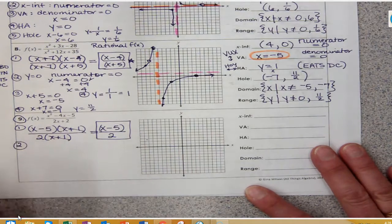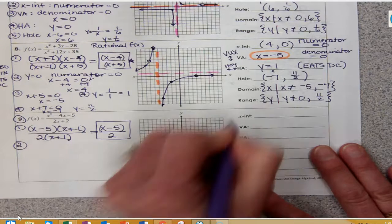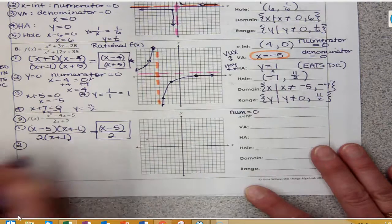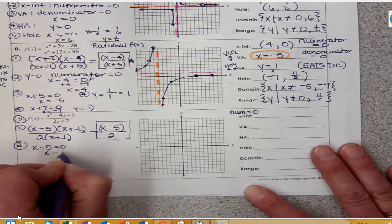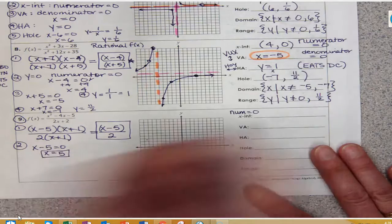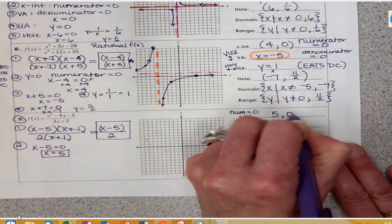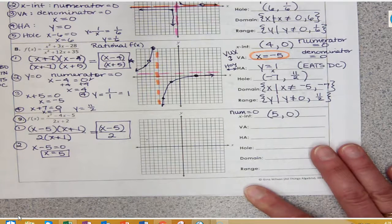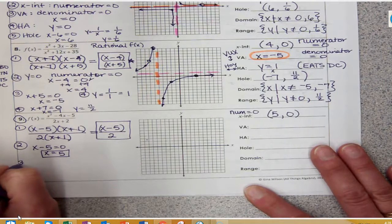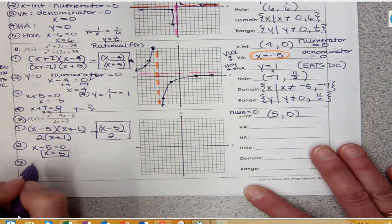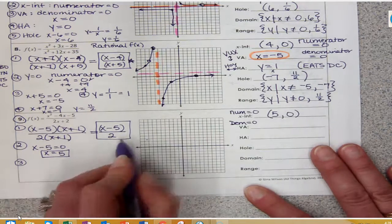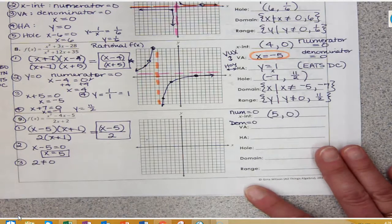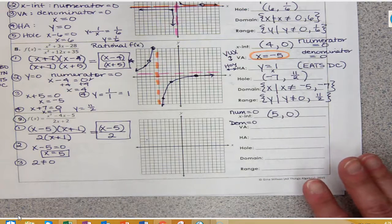For the x-intercept, I set the numerator equal to 0: x minus 5 equals 0, so x equals 5. When x is 5, y is 0. For the vertical asymptote, I set my denominator equal to 0. But my denominator is just 2 — a constant — so as a result, there are no vertical asymptotes.